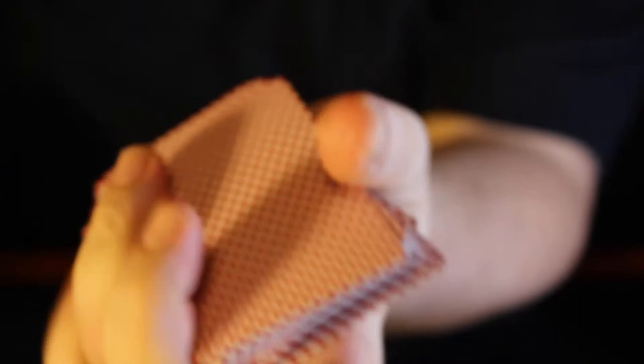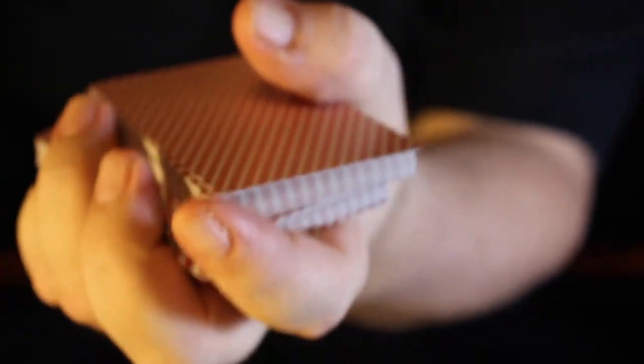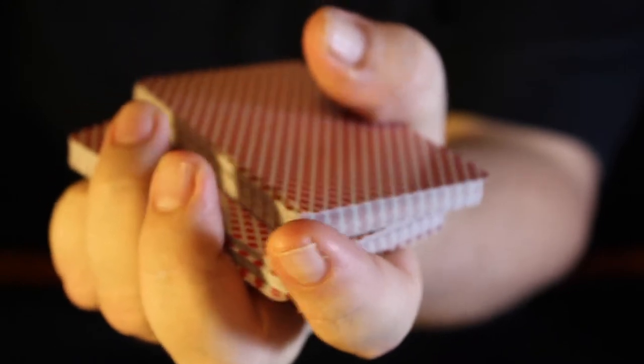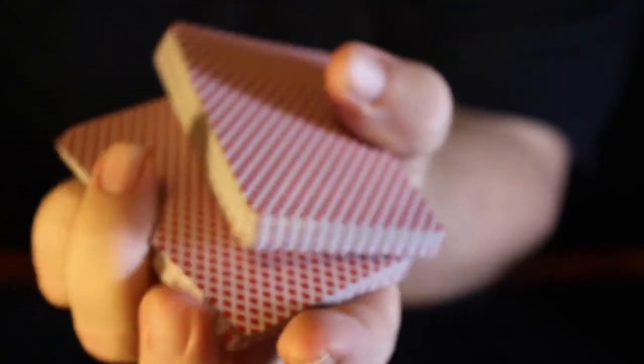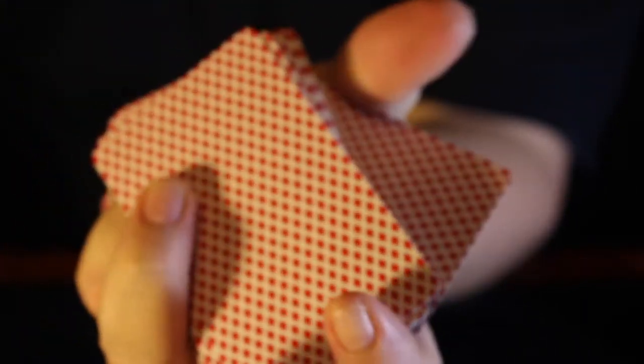Now once you get that down, then start making it go a little closer where it's about that far out. Eventually, you'll be able to do it from a break where you lift onto the fleshy part of the thumb and shift, lift and shift.